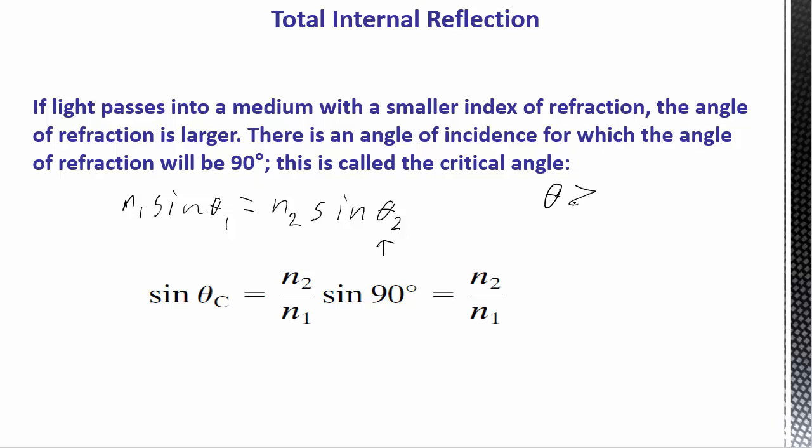The critical angle is the angle at which you first have total internal reflection. If the angle is anything greater, if theta is greater than or equal to the critical angle, then you'll always have total internal reflection. And sine of 90 is just 1.